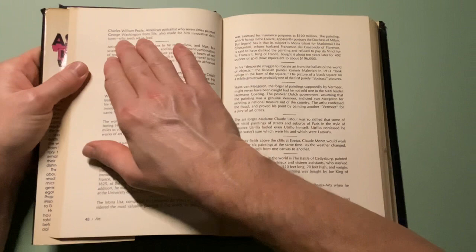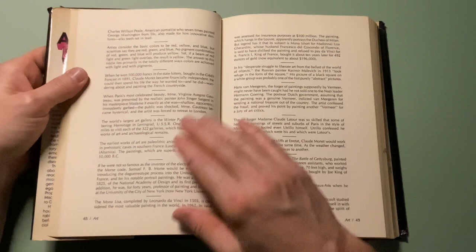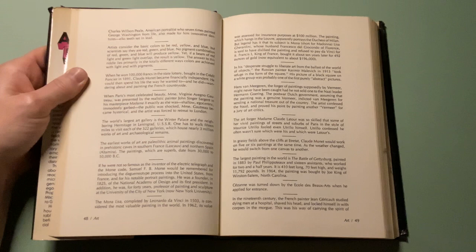Charles Wilson Peale, American portraitist who seven times painted George Washington from life, also made for him innovative dentures: elk teeth set in lead.